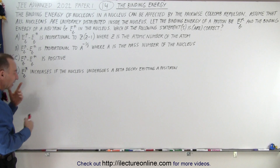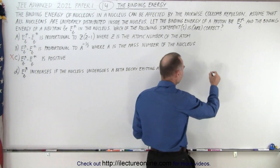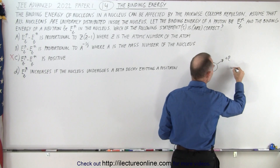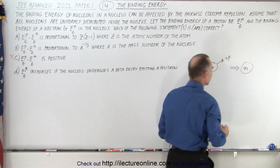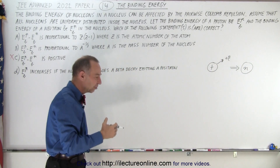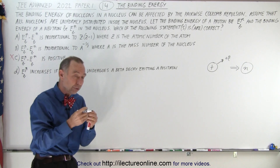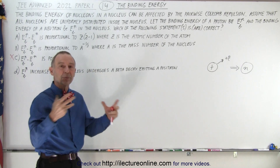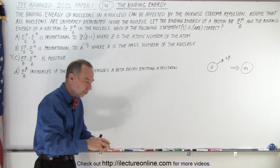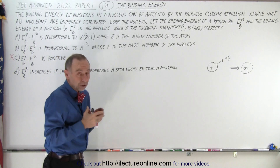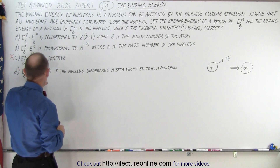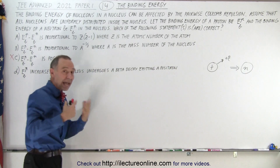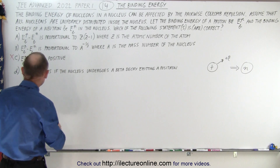For D, let's look at what a beta decay looks like. A proton emits a beta particle — a positron — taking the positive charge away, leaving us with a neutron. So after beta decay we have fewer protons, meaning less repulsive forces between the protons, which means the average binding energy of protons should go up. The more protons there are, the lower the average binding energy; the fewer protons there are, the higher the binding energy. So statement D is correct.